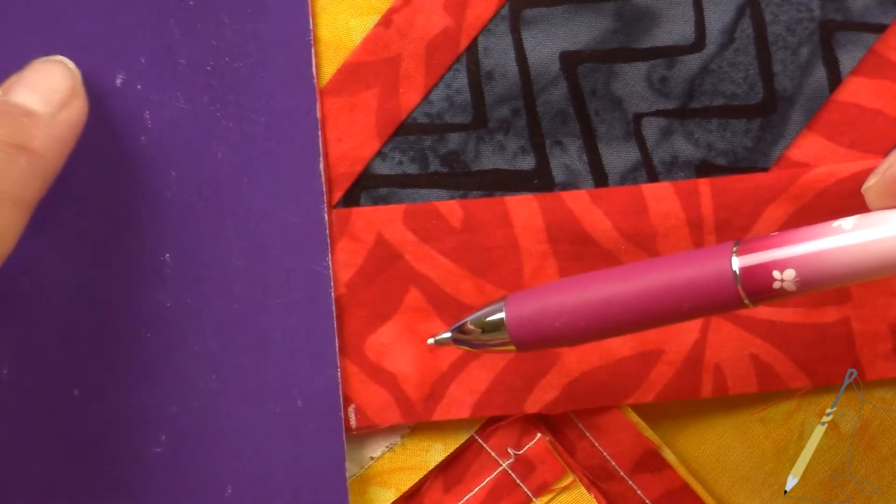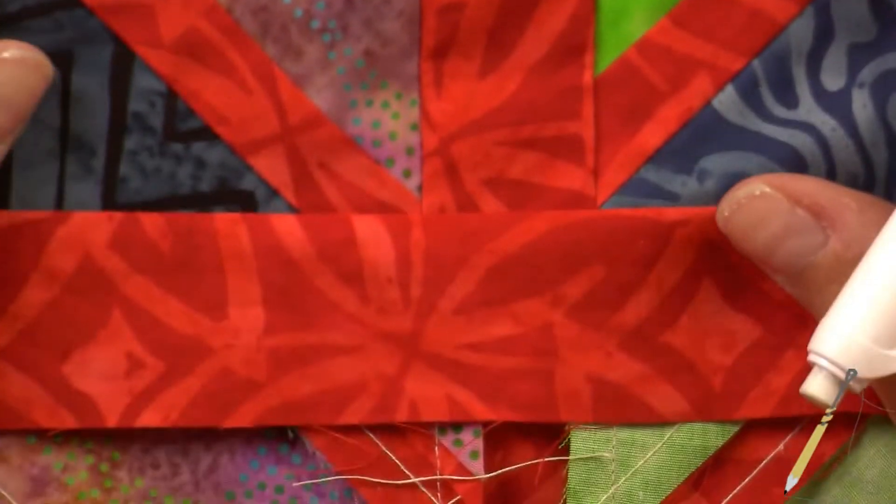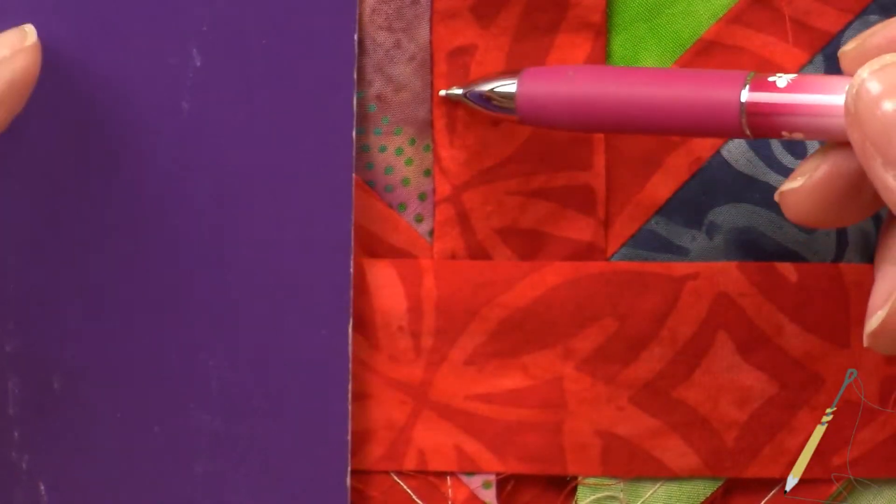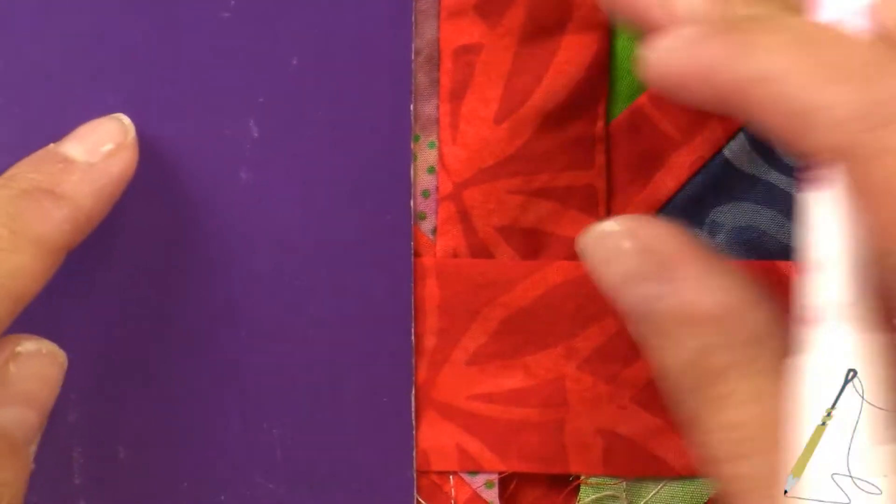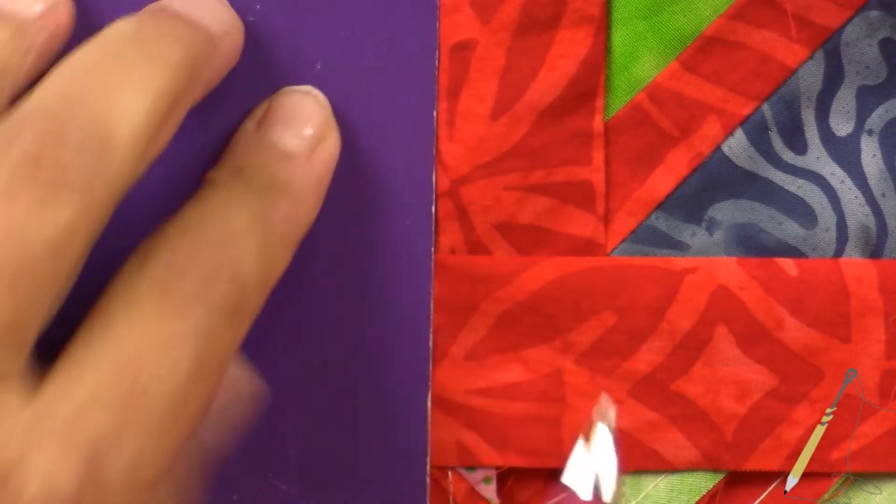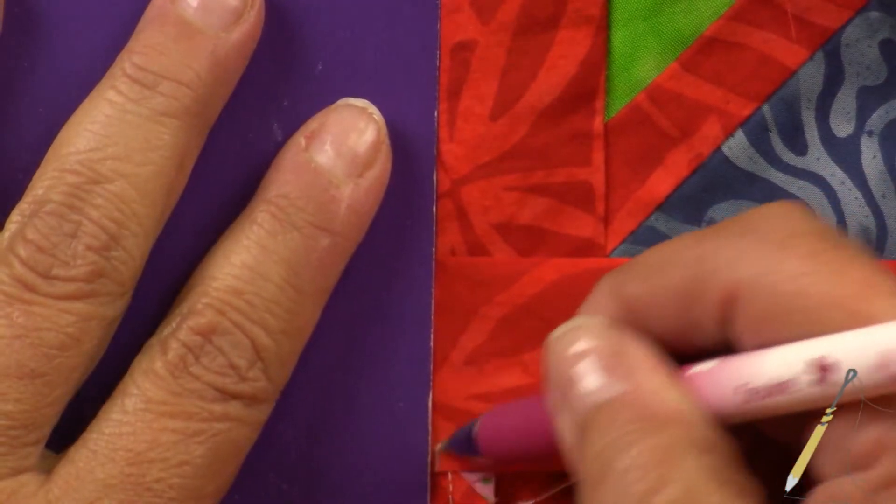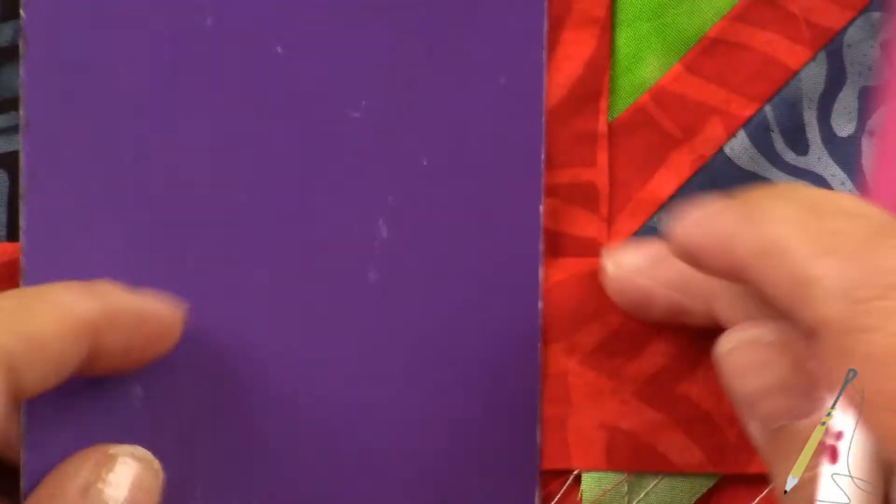If you put the straight edge there, you'll see this one has two spots, so we're going to follow this line here. Let's line it up and then we're marking the very edge.